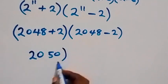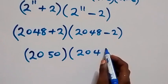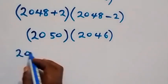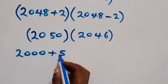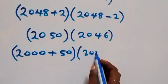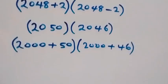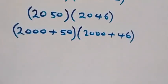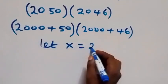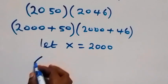Then we have 2050 multiplied by 2046, which we can write again as 2000 plus 50, multiplied by 2000 plus 46. From here, let's represent 2000 with a letter — let x be equal to 2000.